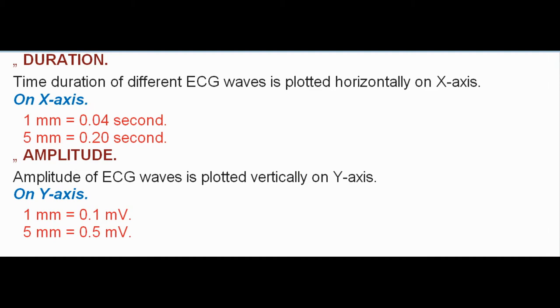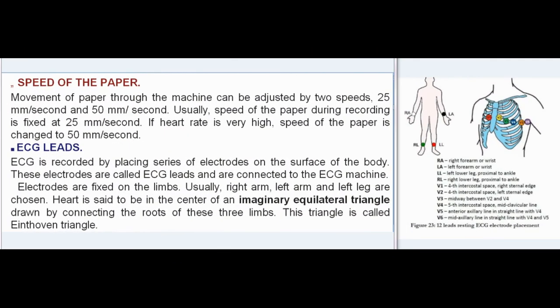On the y-axis, 1 mm equals 0.1 mV and 5 mm equals 0.5 mV. Speed of the Paper: Movement of paper through the machine can be adjusted at two speeds — 25 mm/second and 50 mm/second. Usually, the speed of the paper during recording is fixed at 25 mm/second. If heart rate is very high, speed of the paper is changed to 50 mm/second.